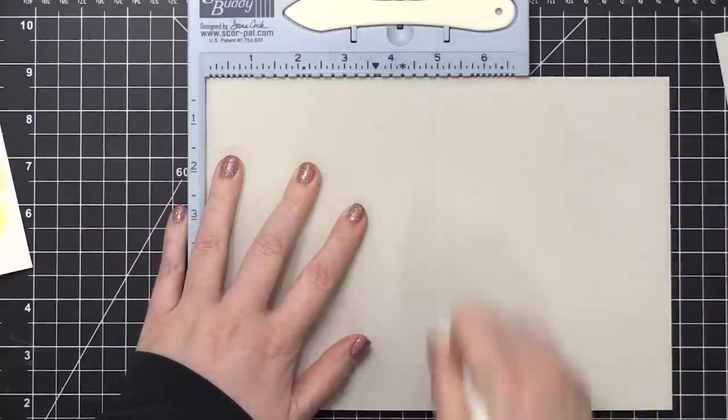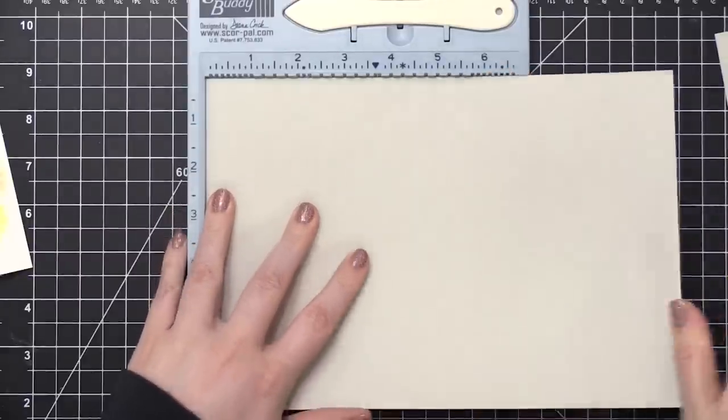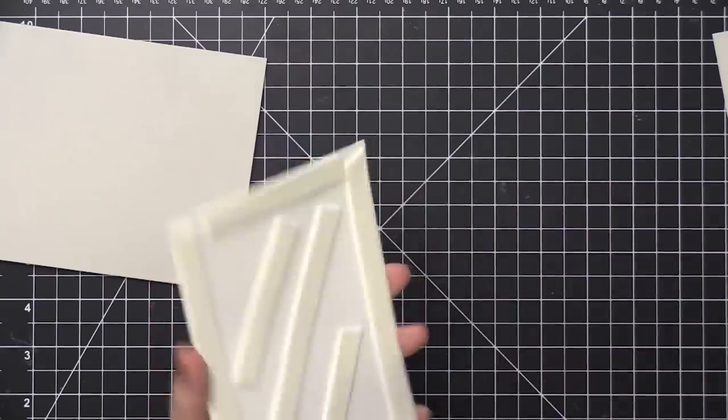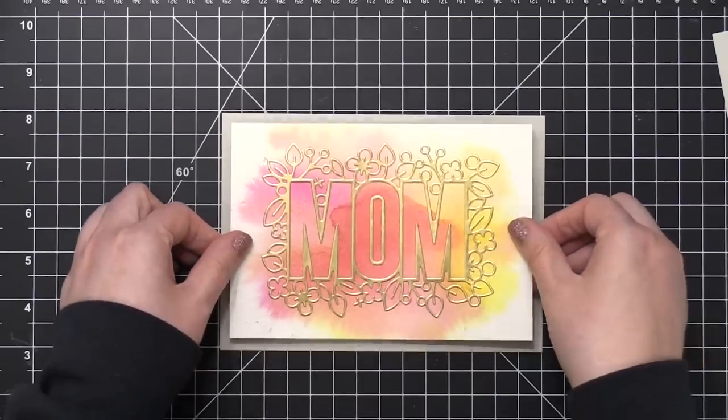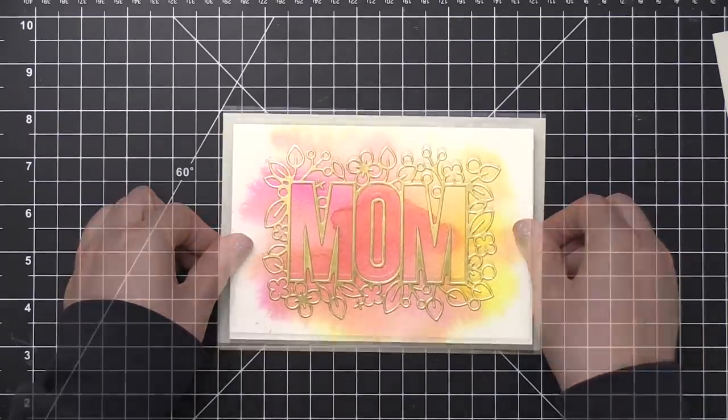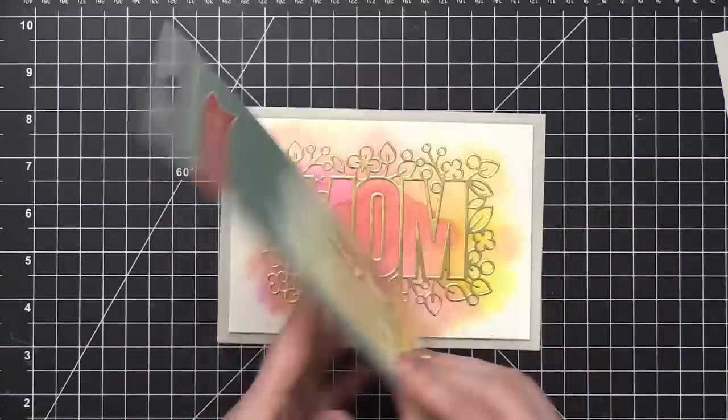For the card base, I'm going to be creating a five by seven card out of some Simon Says Stamp fog cardstock. So I scored that at five inches and then I put quite a bit of foam tape on the back of this watercolor background and then put it directly onto the card base.